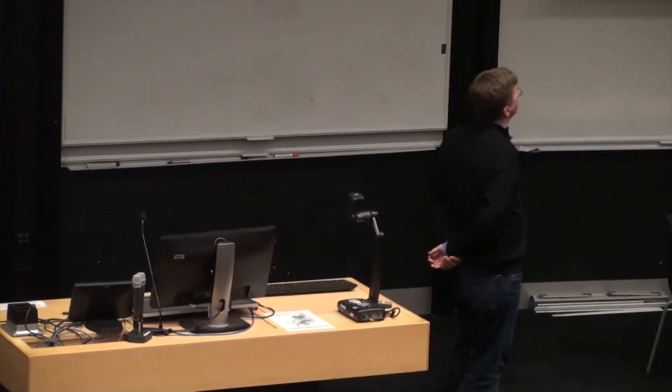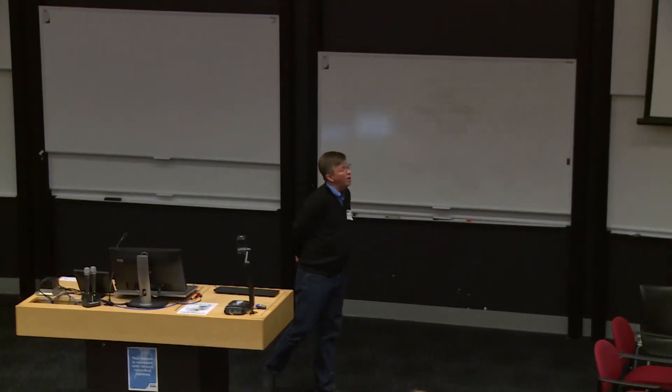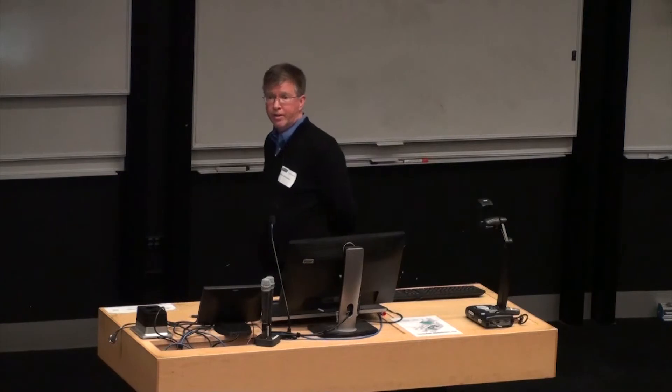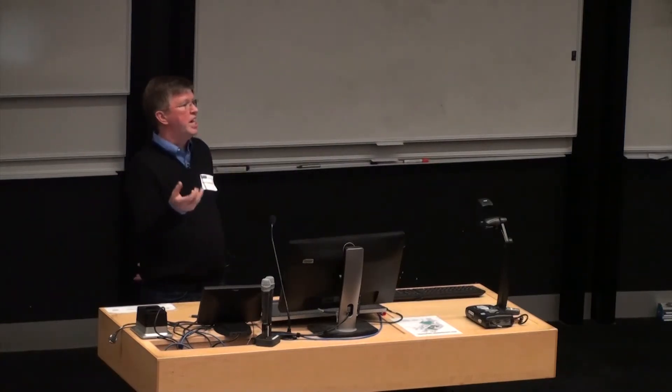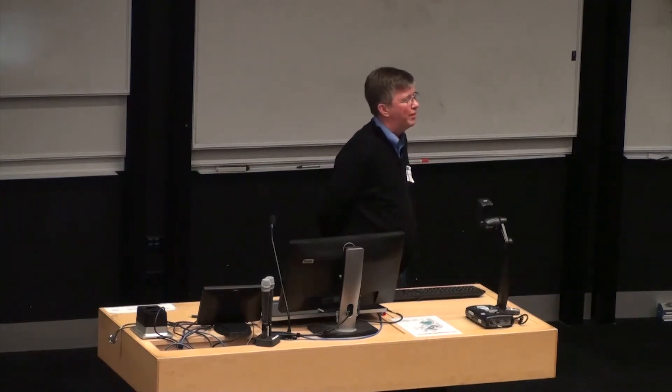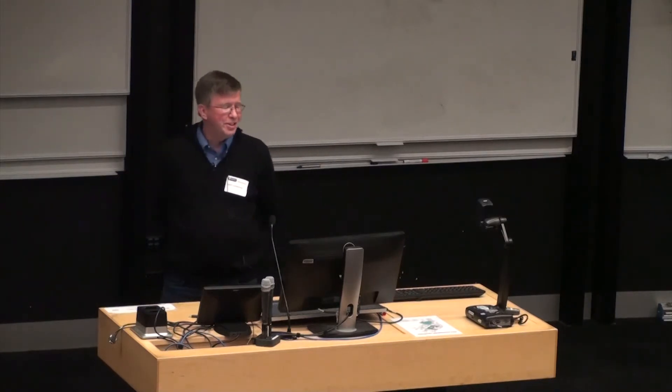From the limited number of students we've interviewed, they are overwhelmingly receptive to the personalized messaging and communication. They do point out that you need to be transparent — that's certainly what we tell our instructors to do. Right at the beginning you just say: hey, I'm going to be writing personal emails to you, and we're going to be pulling data and using that for your benefit. Even though it is using mail merge technology at the back end, you should be very transparent about what you're doing. You need to be careful about what is the student's expectation and achievement criteria versus the one that you as an instructor have. And finally, students have pointed out that they want equal access to any of the resources or follow-up support that you might be suggesting.